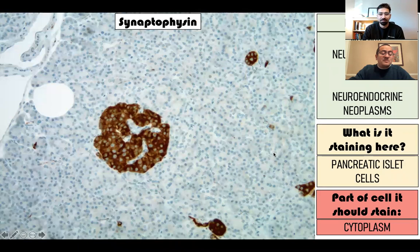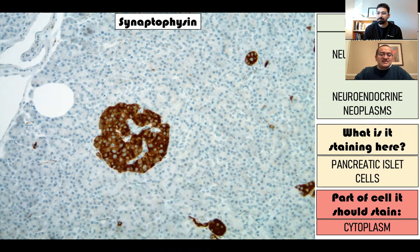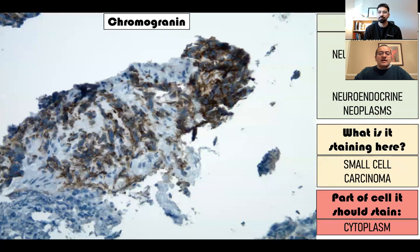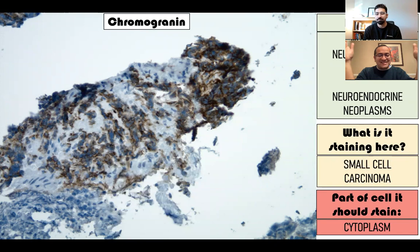Another cytoplasmic marker is synaptophysin - our standard neuroendocrine marker. Here it's staining pancreatic islet cells. Synaptophysin is one of the most sensitive neuroendocrine markers, although not very specific. Then chromogranin - the reverse of synaptophysin. It's not very sensitive, but it is very specific. What that means is when chromogranin is positive you can be almost sure the tumor is really neuroendocrine. However, it will not stain all neuroendocrine tumors. In this example it is staining a small cell carcinoma, which is a neuroendocrine carcinoma of the lung.